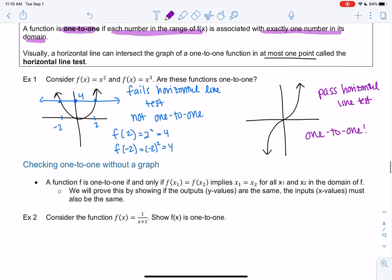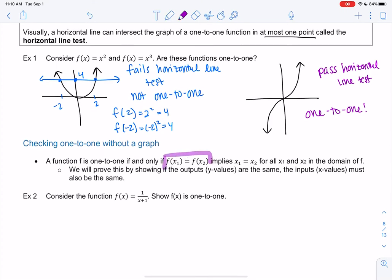We can also find one-to-one without a graph, because sometimes we don't want to draw a graph, or sometimes we just don't have a graph. So here's the really formal definition. A function is one-to-one if and only if f(x₁) equals f(x₂), essentially the y values are the same, then the x values are also the same, x₁ equals x₂.